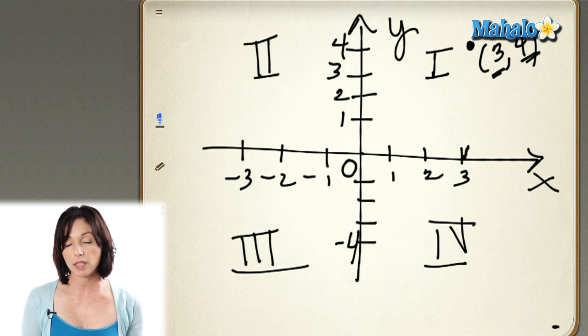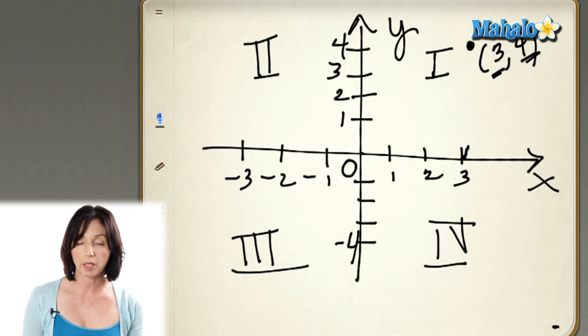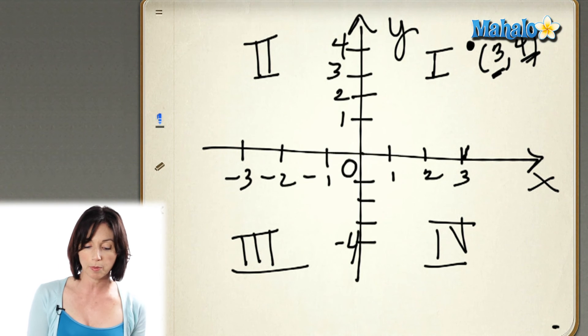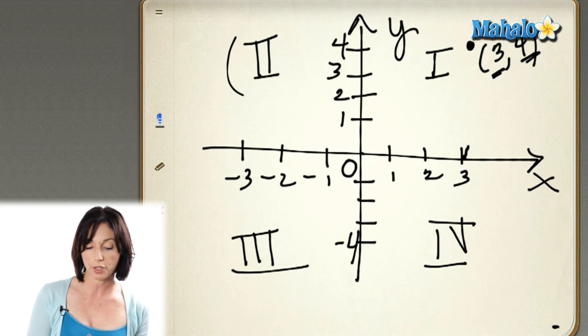Now, if both the x and y values are positive, they'll be in quadrant 1. If the x value is negative, and the y value is positive, it'll be over here in quadrant 2.